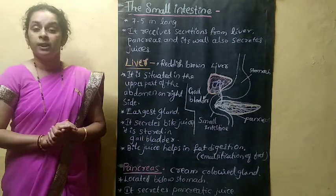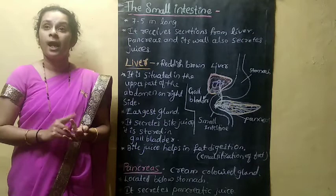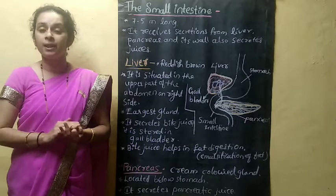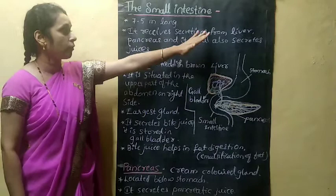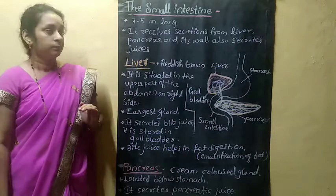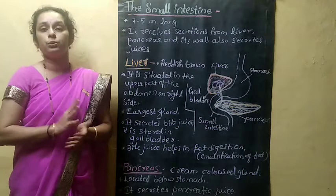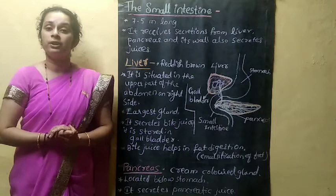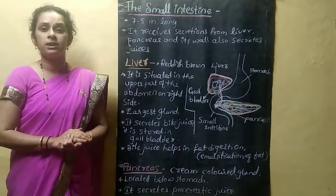The small intestine receives secretions from the pancreas, liver, and its own wall. The wall also secretes some enzymes and juices. All these juices continue the further digestion. Those secretions act on different food substances and help in the further digestion of food components. First we will discuss about the liver.